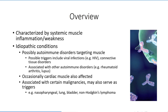One theory that has gained some attention is that the inflammatory myopathies are the result of an autoimmune disorder that targets skeletal muscle. This is in part based on the finding that individuals with inflammatory myopathies are also at a greater risk of developing other autoimmune disorders, such as rheumatoid arthritis and lupus. Certain forms of cancer may also trigger this condition in certain individuals.